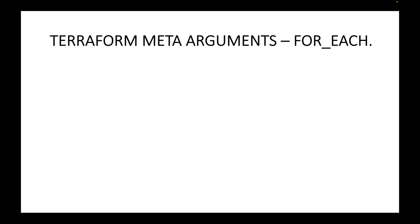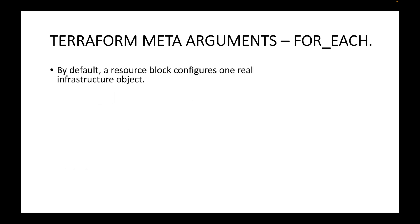In this session we will look at the for_each meta argument. In the last session we looked at the count meta argument which can be used to create multiple resources with the same configuration. We also have the for_each meta argument which can be used to do the same thing.